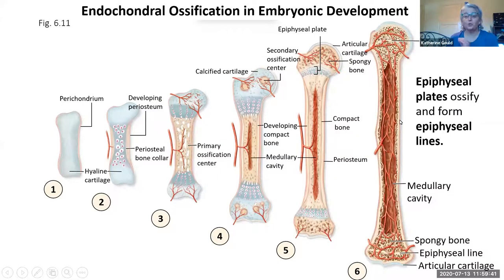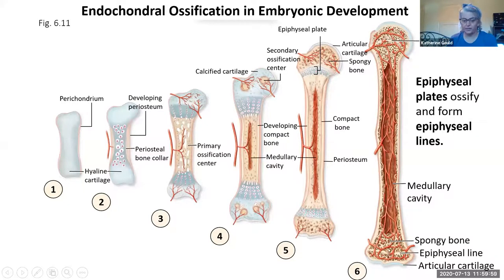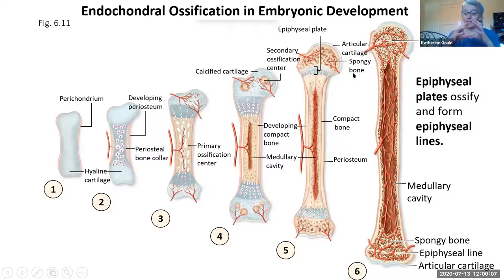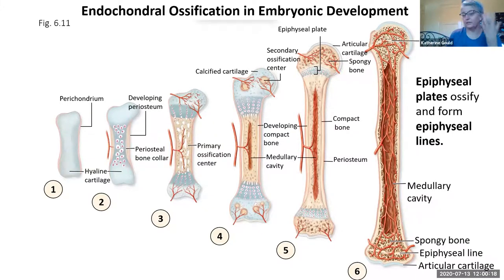When you're done growing after your teenage years, the epiphyseal plates ossify and become the epiphyseal lines. The medullary cavities become much bigger. After that we have no more cartilage except the articular cartilage covering the ends. When you're really old, the epiphyseal lines actually start to go away and that whole area becomes spongy bone. On some of the sectioned bones in the classroom you can barely see the epiphyseal line.